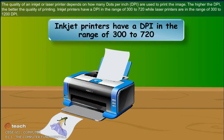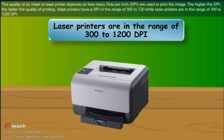The quality of an inkjet or laser printer depends on how many dots per inch (DPI) are used to print the image. The higher the DPI, the better the quality of printing. Inkjet printers have a DPI in the range of 300 to 720, while laser printers are in the range of 300 to 1200 DPI.